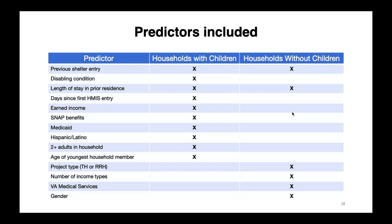I tried many different data elements as predictors; these were the ones that were statistically significant in the final models. Certain predictors were predictive of stable housing for households with children that were not predictive for households without children, and vice versa — that's one reason why it's important to make predictions separately for each household type. A lot of these were the usual subjects — prior shelter entry, disabling condition — those weren't surprising. But some were interesting: having SNAP benefits or number of income types. They kind of make sense in retrospect, but they were highlighted among the other data elements.